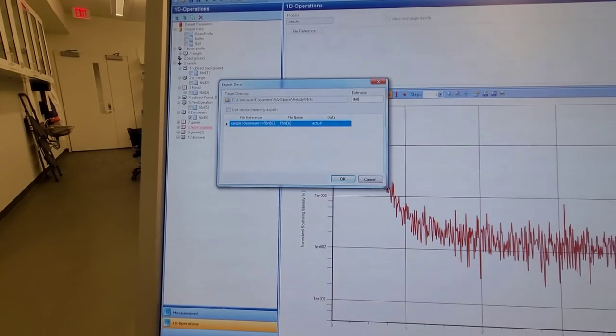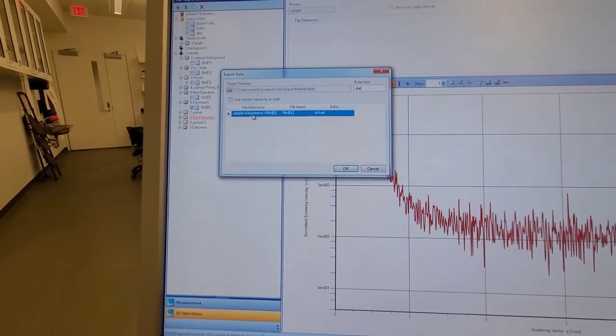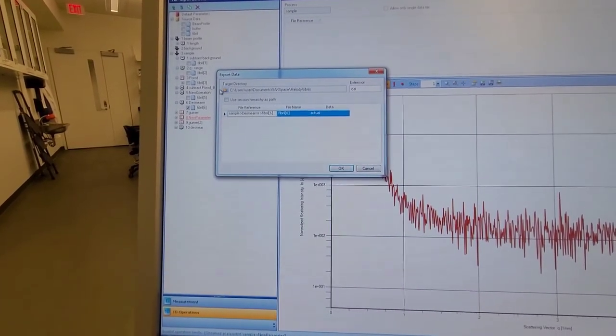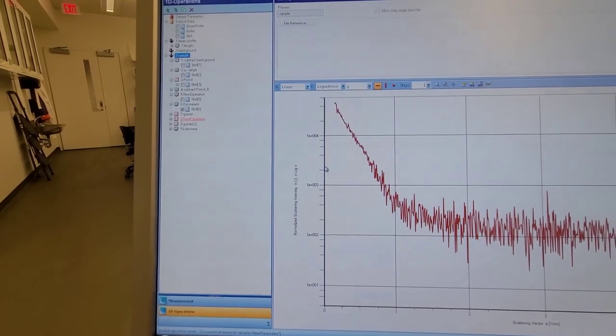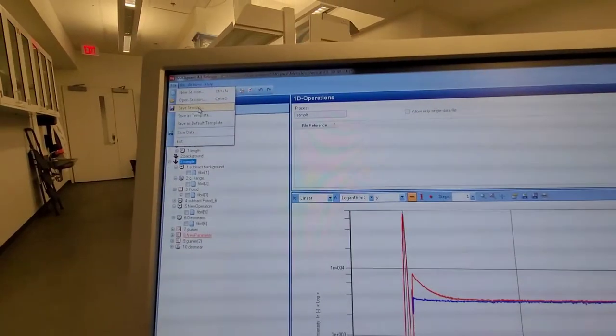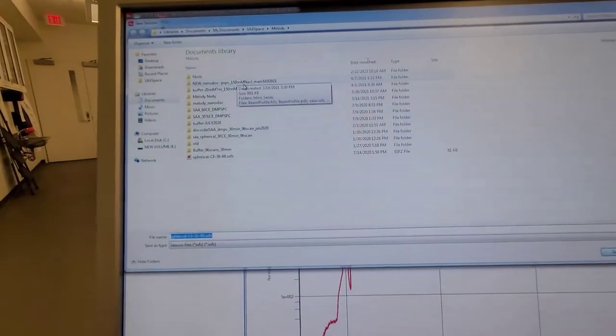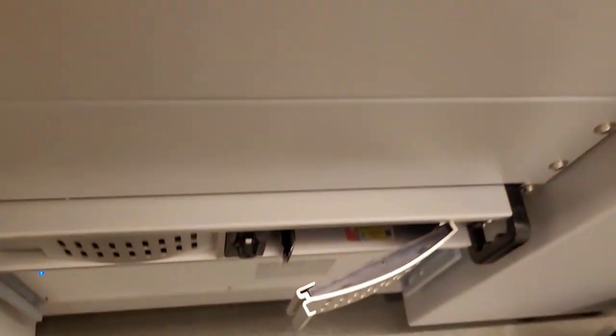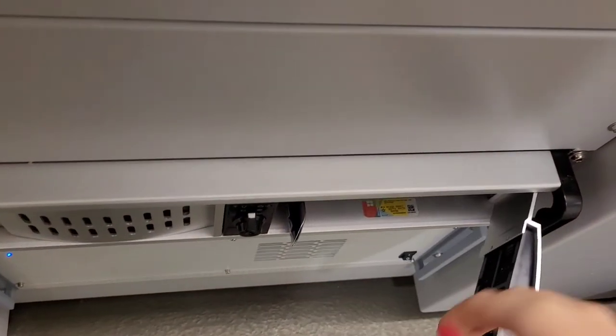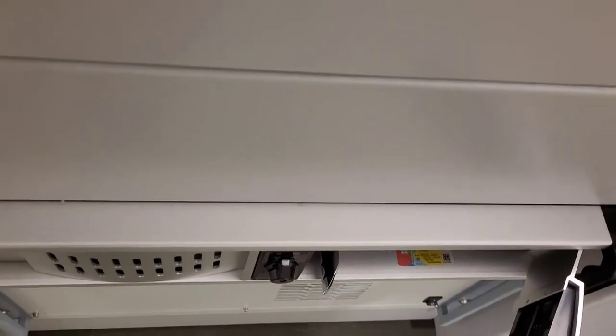This is the one that you need for anything else. This is the useful data. And then you save that as a .dat file because all the processing softwares after that use the .dat file. Save the .dat file onto your USB and you're ready to go for further processing.